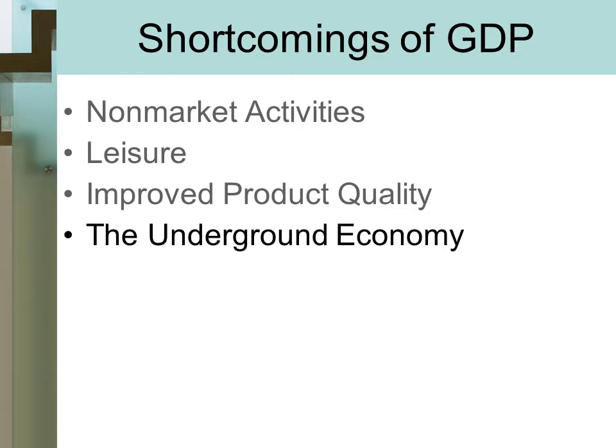The next shortcoming is the underground economy — sex, drugs, rock and roll aside, the Bureau of Economic Analysis is actually more concerned about perfectly legal activities that go unreported. For example, bartering services, paying cash for discounts, or a restaurant not reporting all income from customers. The underground economy is simply legal activities that go unreported, and they can be quite significant.